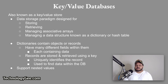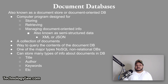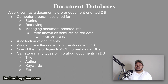A document database, also known as a document store or document-oriented database, is a computer program designed for storing, retrieving, and managing document-oriented information — also known as semi-structured data such as XML or JSON. A document database is a collection of documents and a way to query the contents, and along with key-value stores, is one of the major types of NoSQL non-relational databases. It can store many types of information about documents, such as title, author, and keywords — think of searching for a book on Barnes and Noble's website using title, author, and keywords.